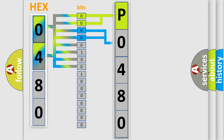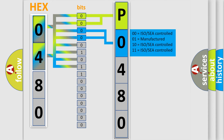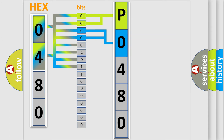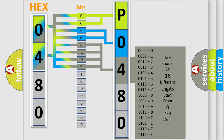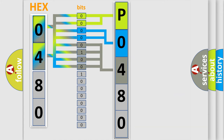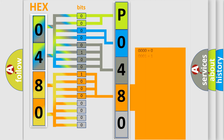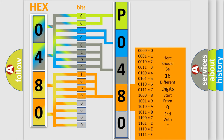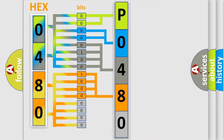The next two bits determine the second character. The last four bits of the first byte define the third character of the code. The second byte is composed of a combination of eight bits. The first four bits determine the fourth character of the code.